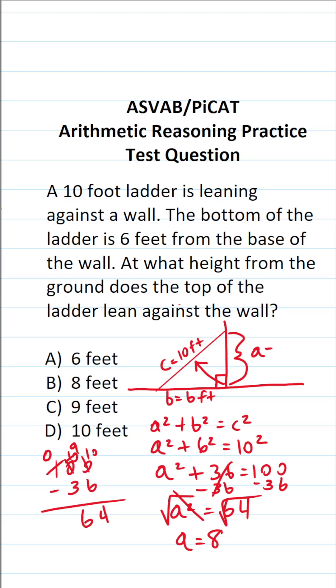So A in this case is 8 feet. In other words, this ladder is leaning 8 feet up this wall, so the answer to this one is B.